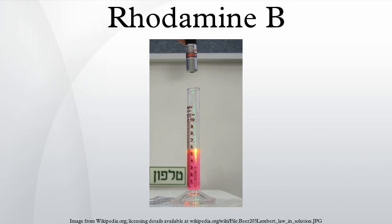Rhodamine dyes are used extensively in biotechnology applications such as fluorescence microscopy, flow cytometry, fluorescence correlation spectroscopy, and ELISA. Rhodamine B is used in biology as a staining fluorescent dye, sometimes in combination with auramine, as the auramine-rhodamine stain to demonstrate acid-fast organisms, notably mycobacterium.